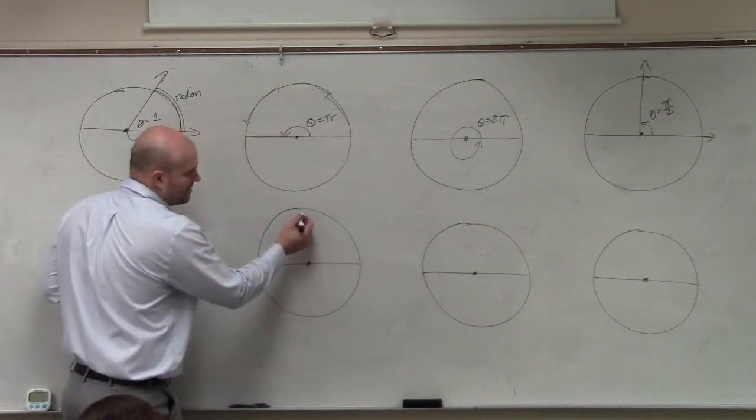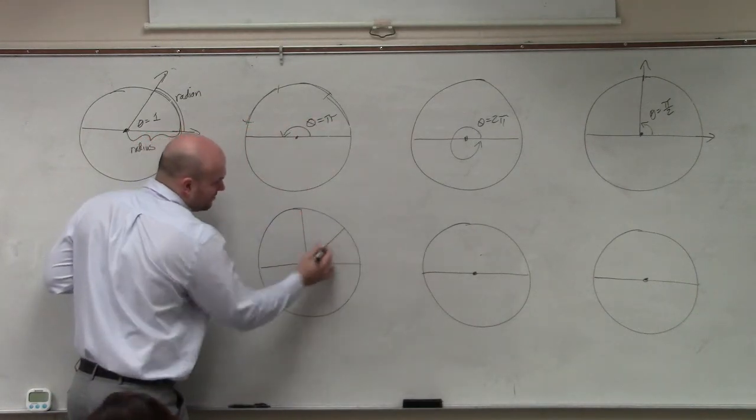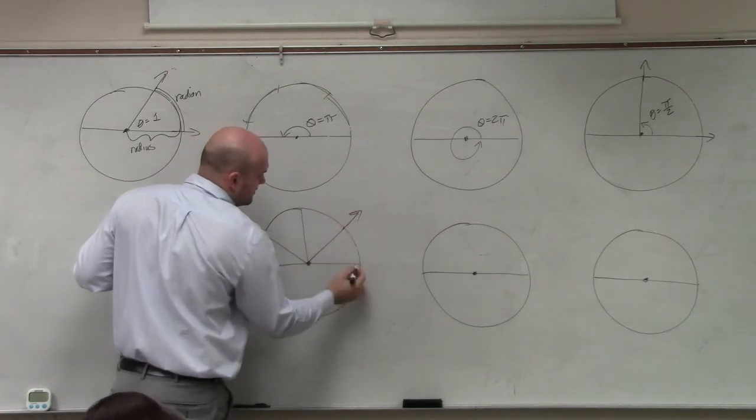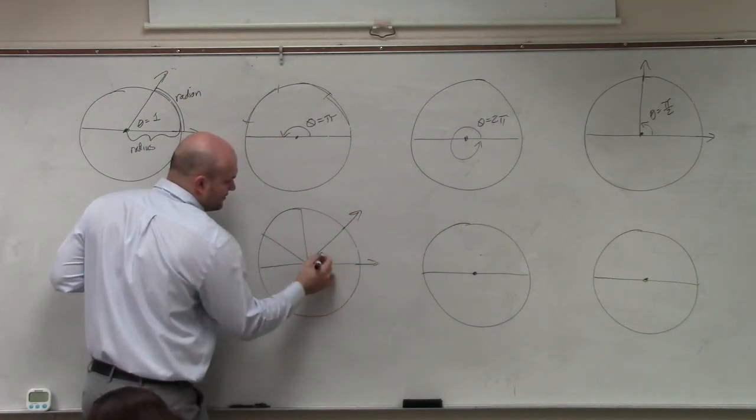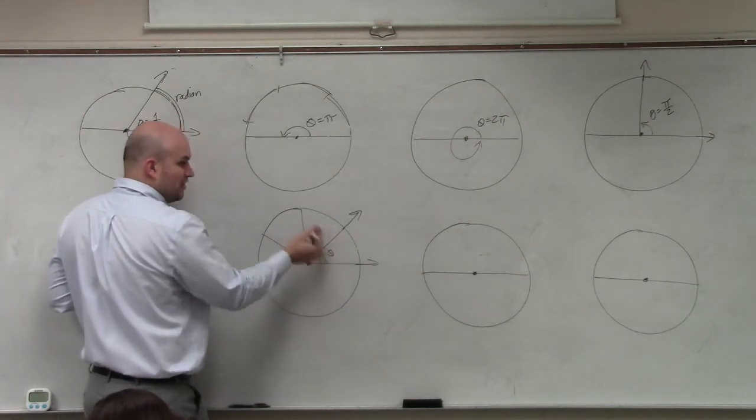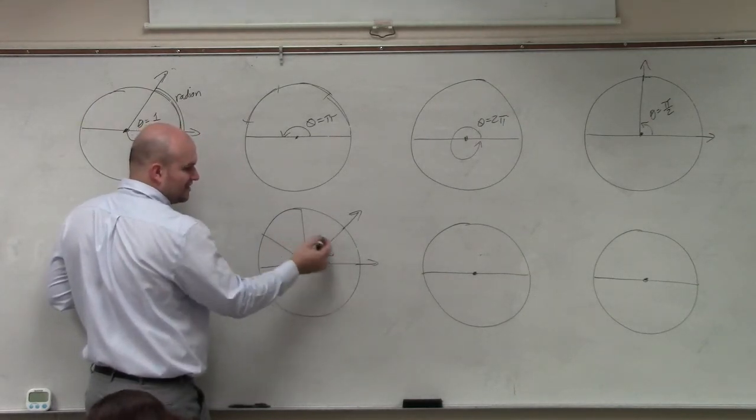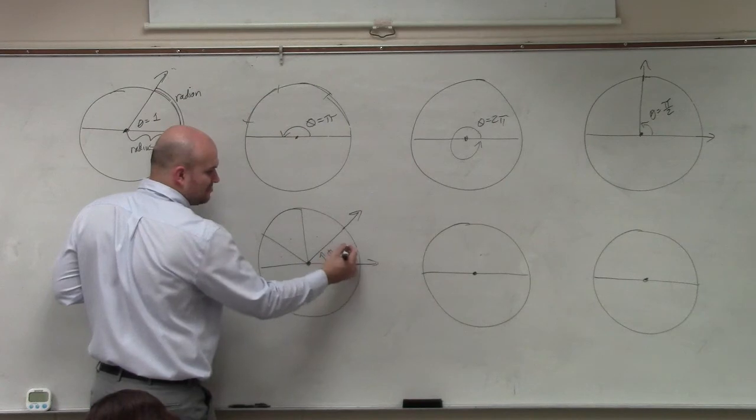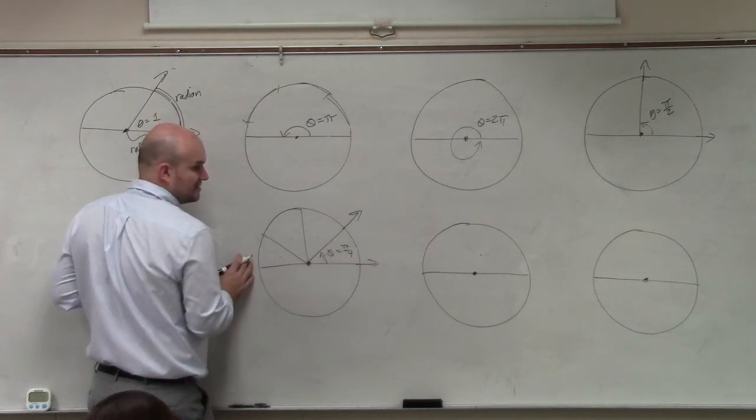Because we can break it up not even to halves, but we could break it up into quarters. So therefore, the rotation from my initial side to my terminal side is, if halfway around is pi, and I broke it up into fourths, then that means that pi over four is one fourth that rotation.